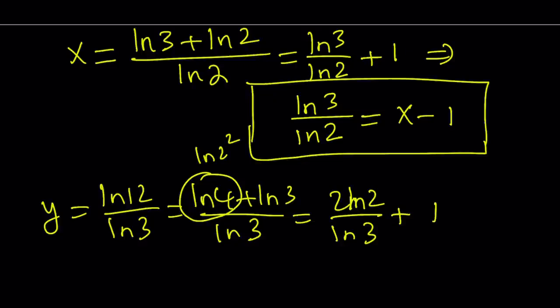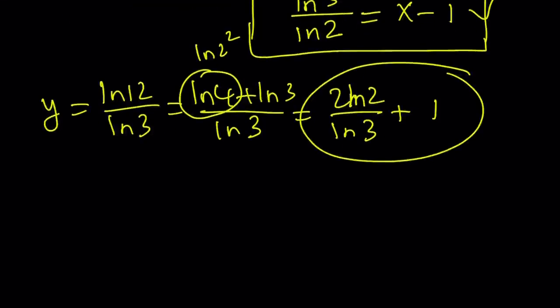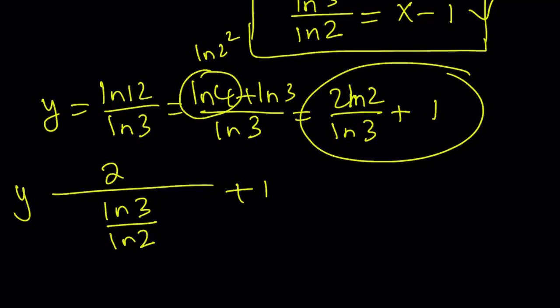Awesome. Now, we have an expression for ln 3 over ln 2 here. How can I use that here? Well, I can go ahead and flip ln 2 over ln 3 and write it as 2 over ln 3 over ln 2 plus 1. And remember, this is y.